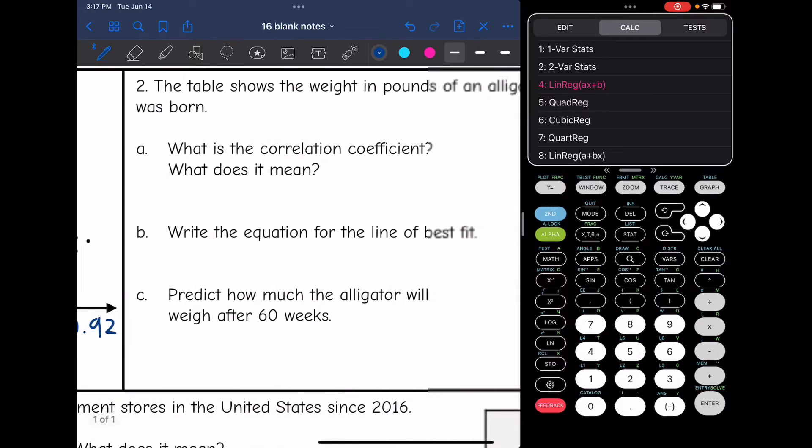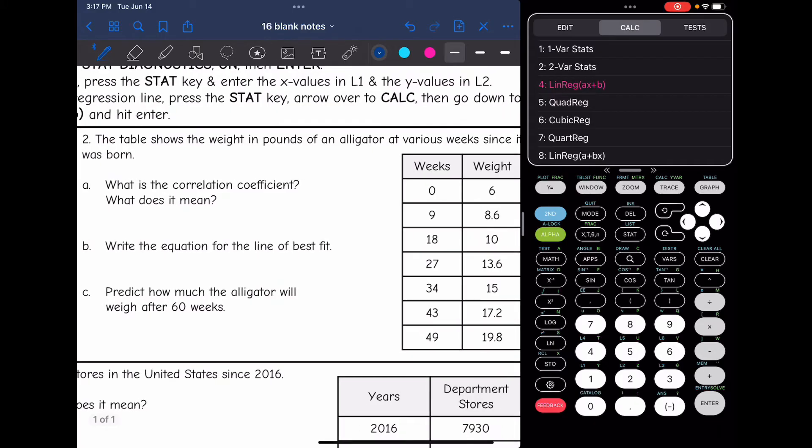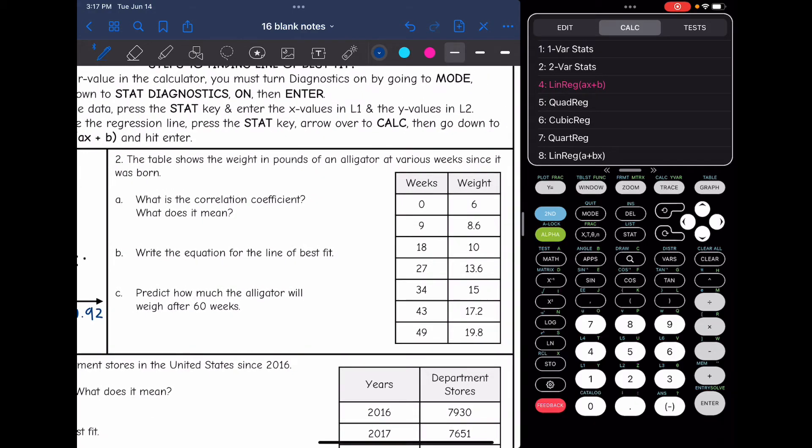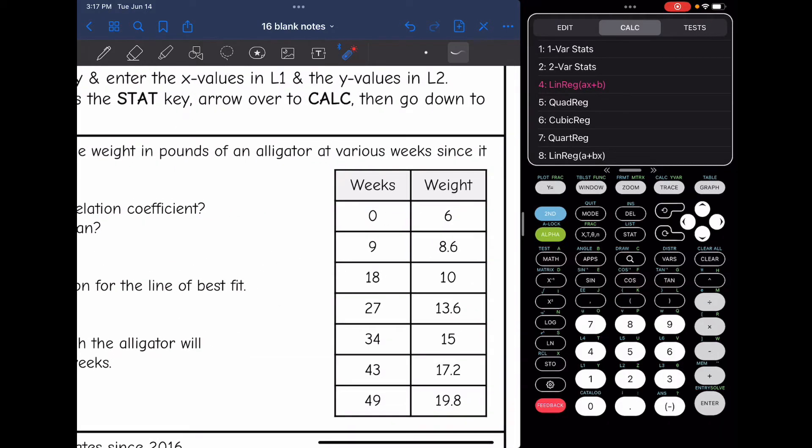Let's look at number 2. It says the table shows the weight in pounds of an alligator at various weeks since it was born. What is the correlation coefficient? What does it mean? So I need to enter this data into the calculator so it can tell me the correlation coefficient. I'm going to let weeks be x. That's the independent that will determine the weight.